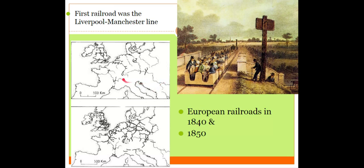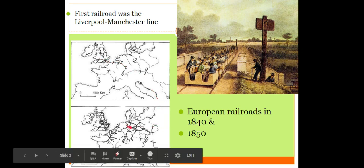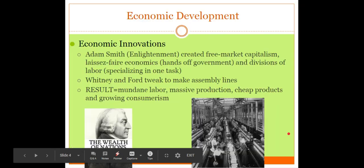Look at this map. In 1840, railroads really only existed in England. By 1850, look at the continent — lots of rail. And eventually by the 1880s and 1890s, there'd be rail all the way across Russia.